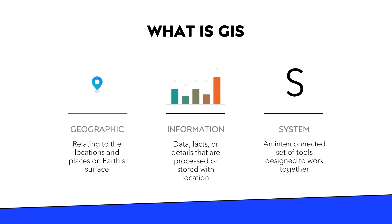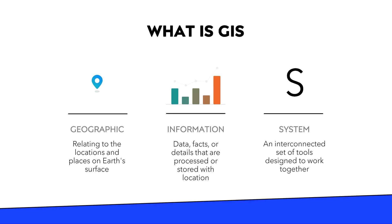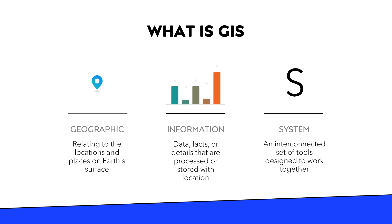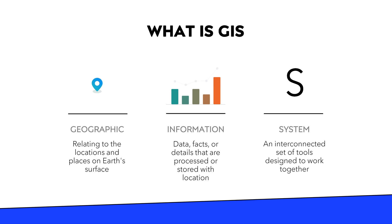Attributes are details like the time an event occurred, the type of event, and any other contextual data that helps in the context of the geographic location. If we integrate this attribute data — this information — with the geography aspect, then we start to build up what's called geographic information, or GIS datasets. It helps us to understand not only the where, but also what's happening, when it's happening, and why it's happening.